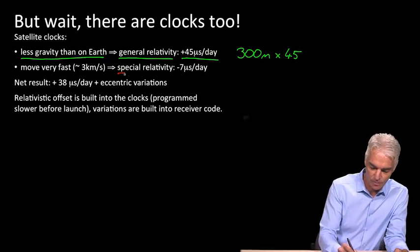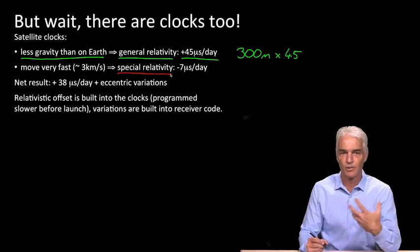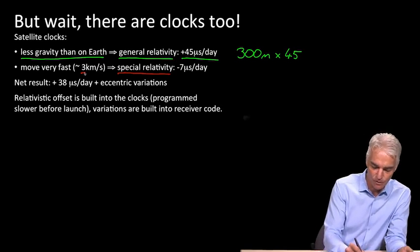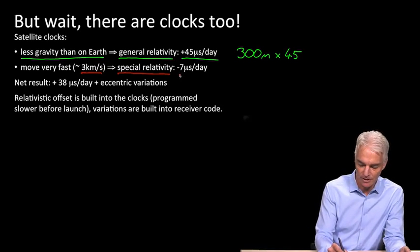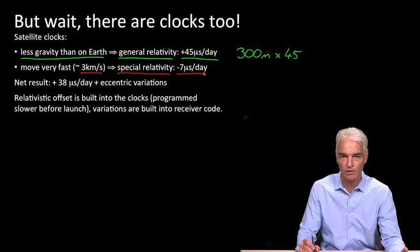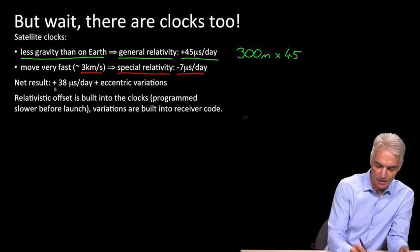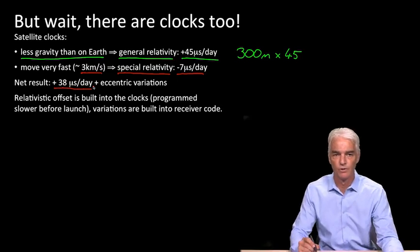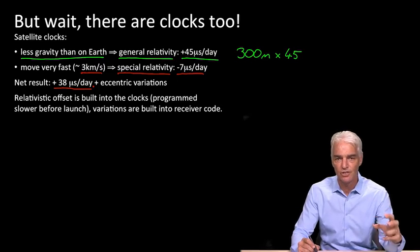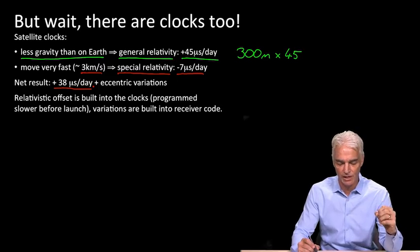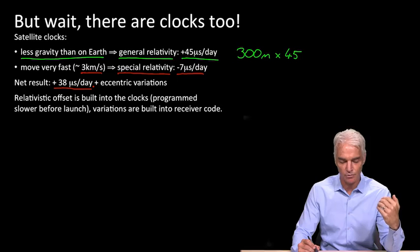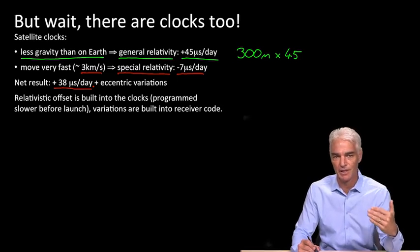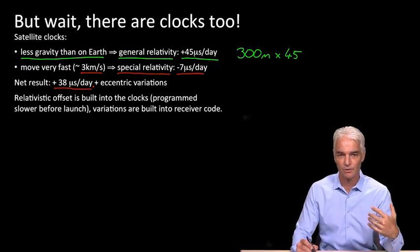Also, Einstein had his theory of special relativity that says, as objects move faster, time slows down, and the satellites move about three kilometers per second relative to us and relative to the Earth. And so time slows down by seven microseconds per day because of special relativity. So the combination of those two means that at the satellites, time goes faster by 38 microseconds each day. And so each GPS satellite literally is programmed so that its clock runs slower on Earth by 38 microseconds each day so that when it gets up into orbit, because of general and special relativity, it'll run faster by 38 microseconds, and therefore run at the expected speed. So that in itself is quite profound and amazing.